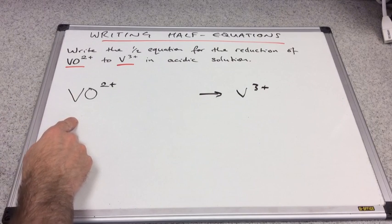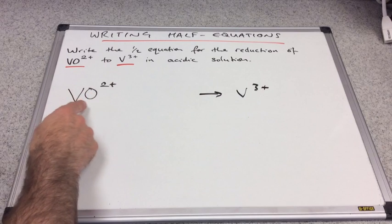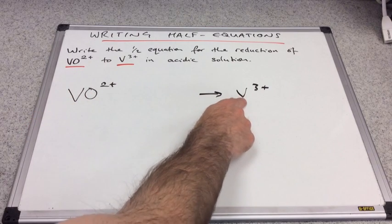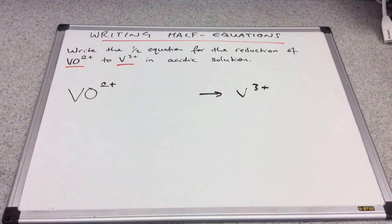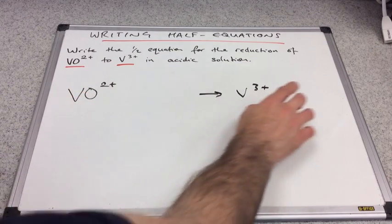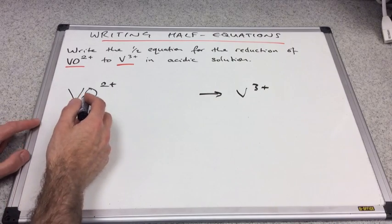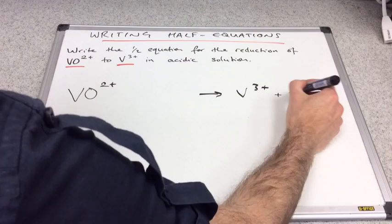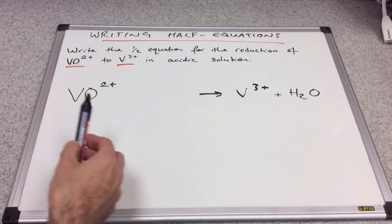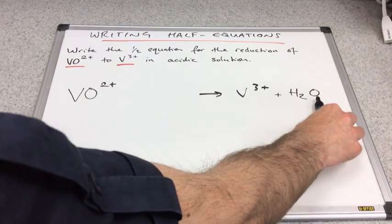So what's rule number one? Rule number one is balance the atoms. So you can see that we've got one V there, one V there. So the V's are sorted. One O there, we haven't got any O's here. So we need some oxygen. Next thing to appreciate is what are you allowed to use to balance half equations, to balance the atoms in half equations. And you're only allowed to use a small number of substances. And one of them is water.